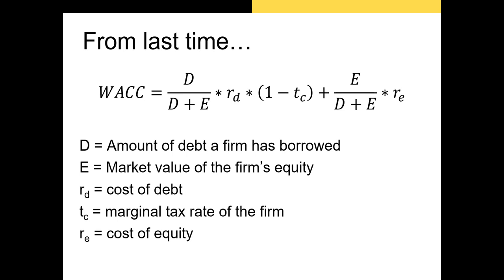The market value of equity is usually calculated as the market cap of the firm. And finally, R sub E is our cost of equity, which is the expected return on the stock using the CAPM or the dividend growth model — but usually we prefer to use the CAPM if we have the components.